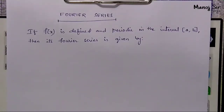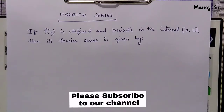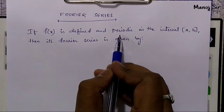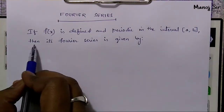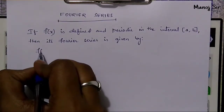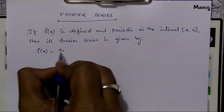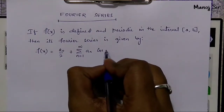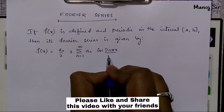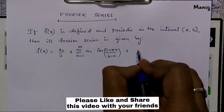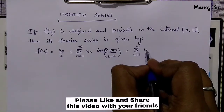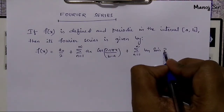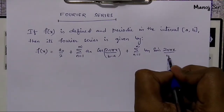In this video we are going to see Fourier series — specifically the formula we are going to use. If f of x is defined and periodic in the interval a to b, then its Fourier series is given by: f of x equals a naught upon 2, plus summation n equals 1 to infinity of aₙ cos(2nπx / (b−a)), plus summation n equals 1 to infinity of bₙ sin(2nπx / (b−a)).